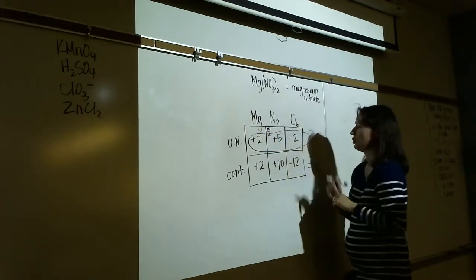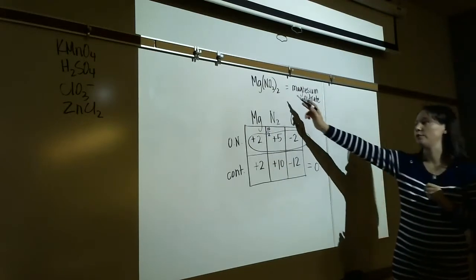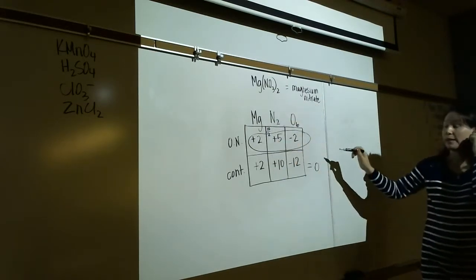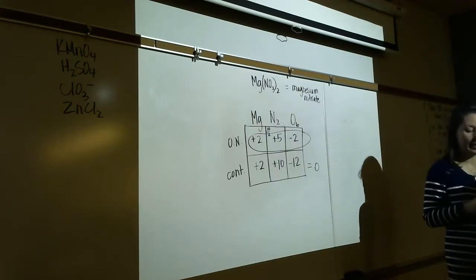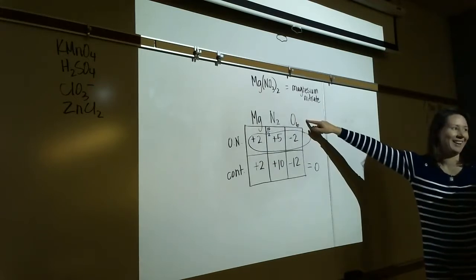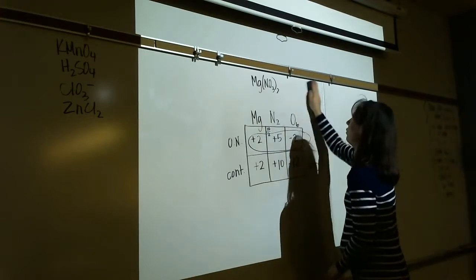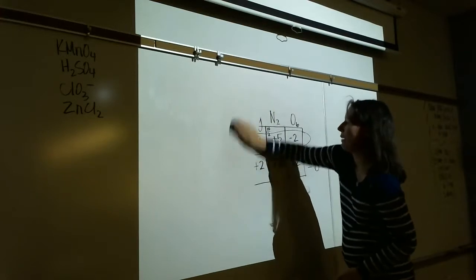No chart needed for copper metal or iron(II) ion. Copper metal Cu(s) is a pure element — oxidation number zero. Iron(II) ion Fe2+ is a monatomic ion — oxidation number equals its charge, so +2.